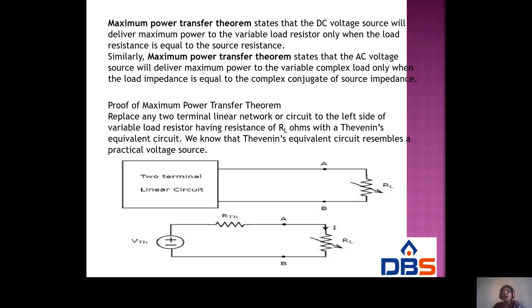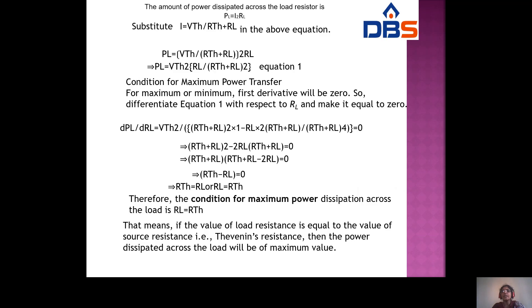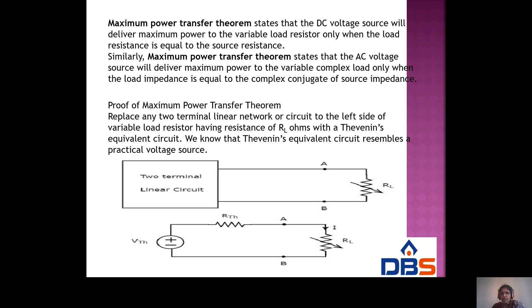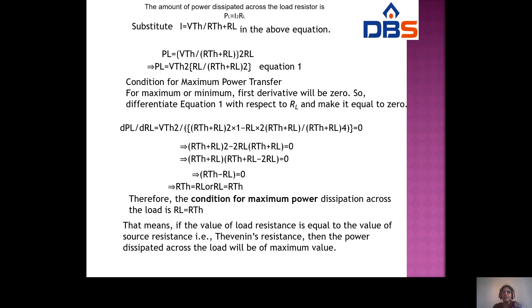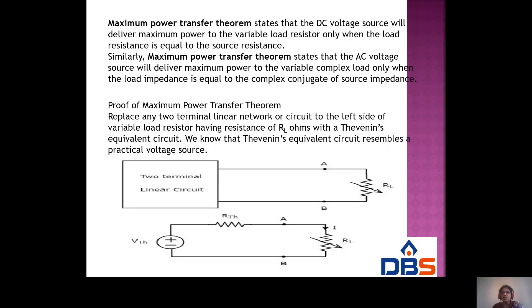For this circuit, find the Thevenin resistance and Thevenin voltage, then place the load resistance. The amount of power dissipated across the load: knowing the current IL and resistance RL, we use P = I²R. The load current I equals Vth divided by (Rth + RL), since Rth and RL are in series.